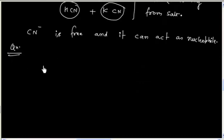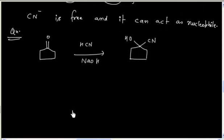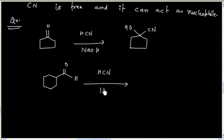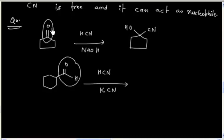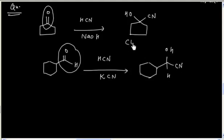Let us try some problems. What will be the product in this reaction? This is a cyanohydrin formation, so we will have cyanohydrin. In the next example we have an aldehyde — once again we will have cyanohydrin formation.